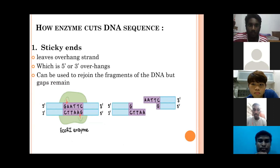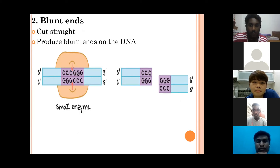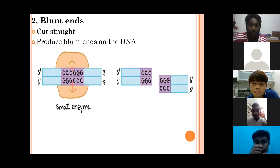The sticky end leaves overhang strands in the direction of 5-prime or 3-prime overhangs. This sticky-end DNA sequence can be used to rejoin fragments of the DNA, but there will be a gap remaining between those two DNA fragments. The blunt end, by contrast, is where the enzyme cuts straight through the DNA sequence, separating the two ends equally.